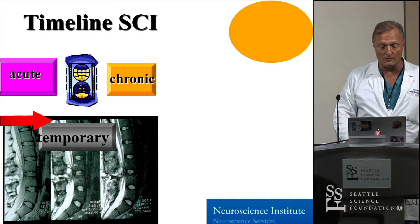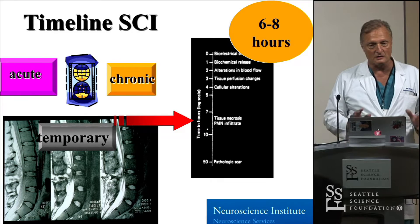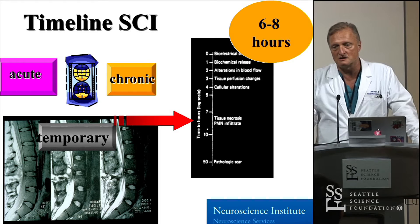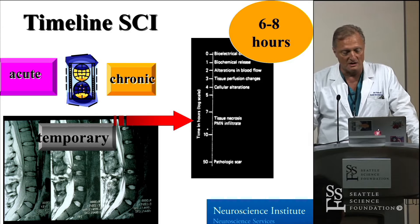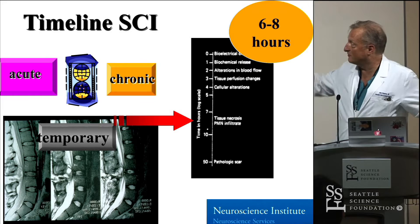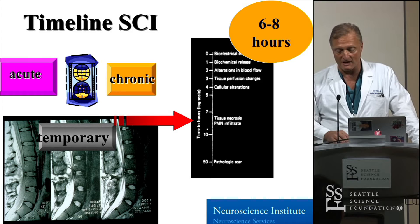Based on animal research and increasingly available clinical data, there's a golden time period for spinal cord injury patients. It's nearly impossible in most clinical settings, even in the USA, to achieve the magic window of six to eight hours from dislocation or serious cord impingement to decompression. Twenty-four to forty-eight hours is probably as good as it gets. But if you have a freshly dislocated neck in your facility, you can change that person's life by effectively decompressing the cord.